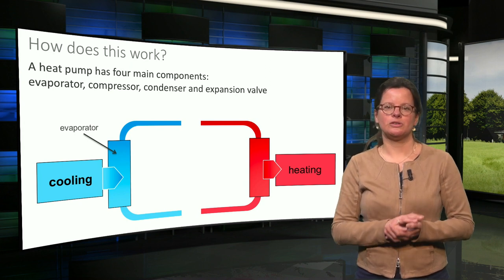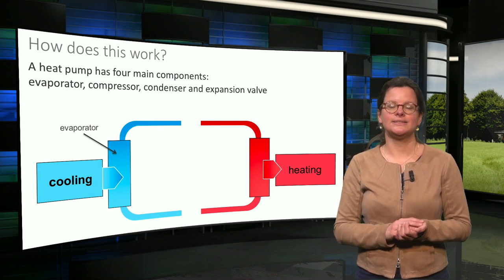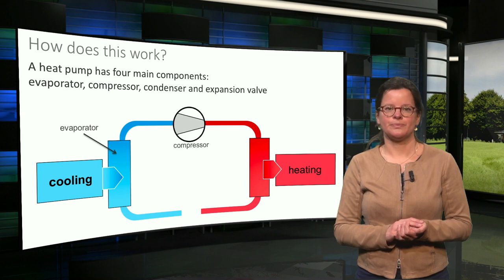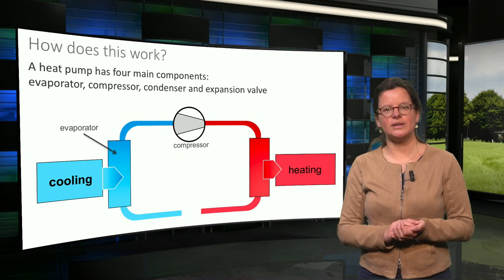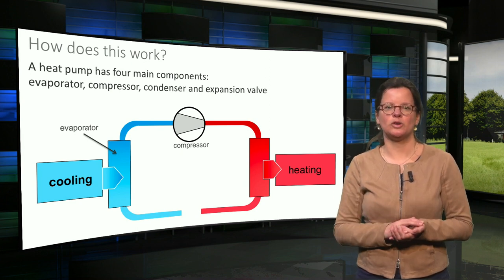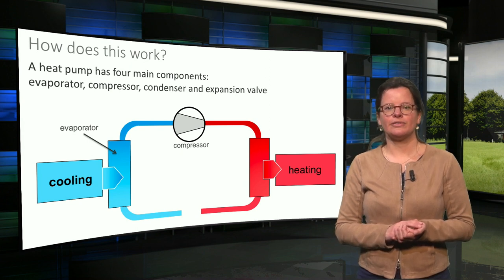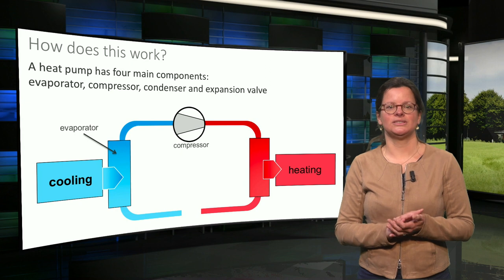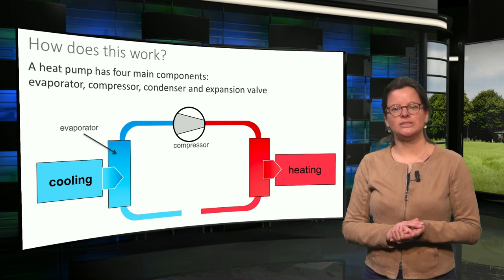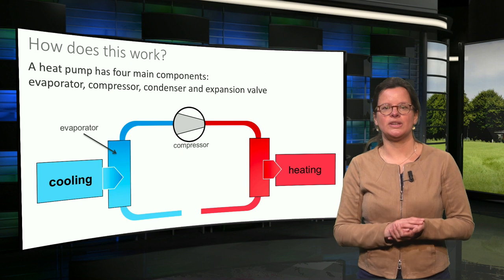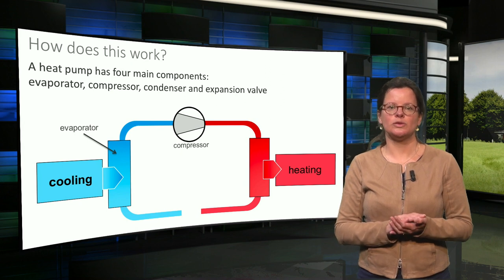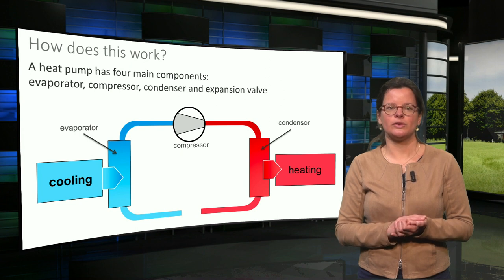In order to further increase the temperature of the refrigerant, which is now a gas, a compressor is used. By compressing the gas, its temperature is increased. The achieved temperature must be higher than the temperature of the hot body in order to be able to transfer the heat. This compression of gas requires the input of electricity. The gas with the increased temperature then passes another heat exchanger where heat is transferred to the hot body. This heat exchanger is called a condenser as the refrigerant returns to a liquid phase as a result of the heat transfer.